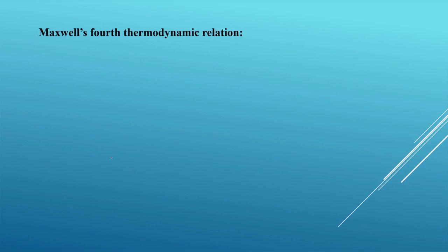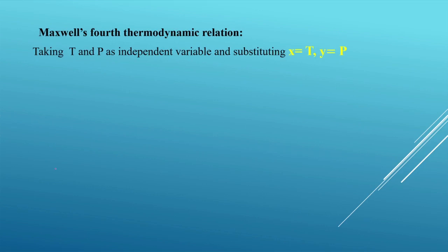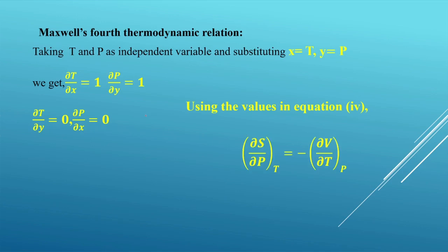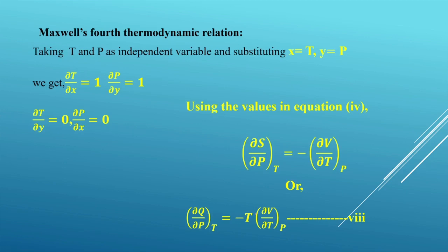For the fourth Maxwell relation, we take x = T and y = p. We get ∂T/∂x = 1, ∂p/∂y = 1, and ∂T/∂y = 0, ∂p/∂x = 0. Substituting into the general equation gives (∂S/∂p) at constant T = −(∂v/∂T) at constant p, or in terms of q: (∂q/∂p) at T = −T·(∂v/∂T) at p. That is the fourth thermodynamic relation.